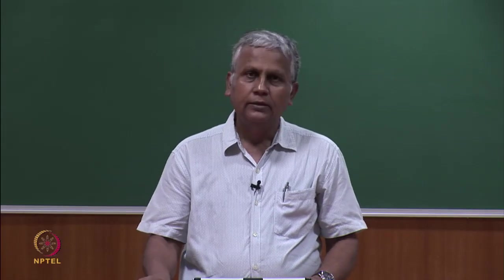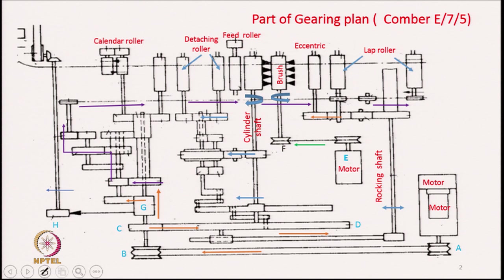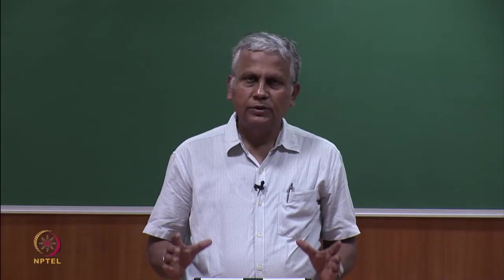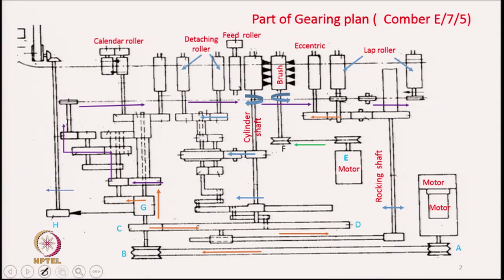Today we are going to discuss analysis of drive to the combing machine. The comber is a very complex machine; there are different types of mechanisms working together and giving drive to different organs of the machine. Some drives are simple in nature, but some are complex. Looking at the gearing plan shown here, this is part of the whole gearing diagram — the entire diagram cannot be accommodated in one slide. We see three motors driving this part of the machine.